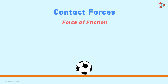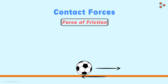The surface applies a force on the ball, and the direction of this force is opposite to that of the motion. So when the ball was travelling towards the right, the surface was applying a force on it towards the left. The force applied on the ball by the surface is called the force of friction, or simply friction.